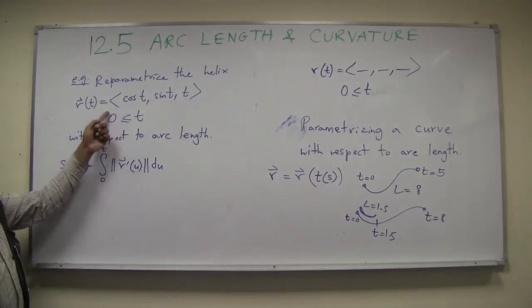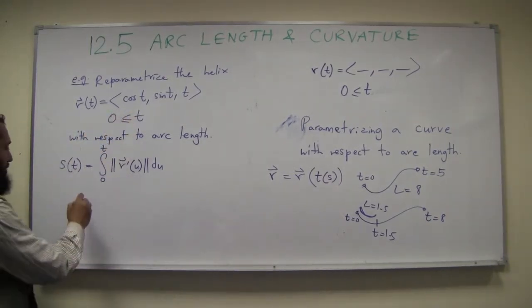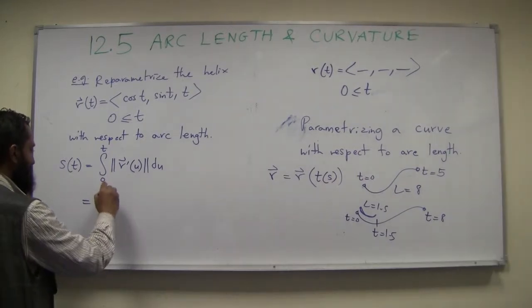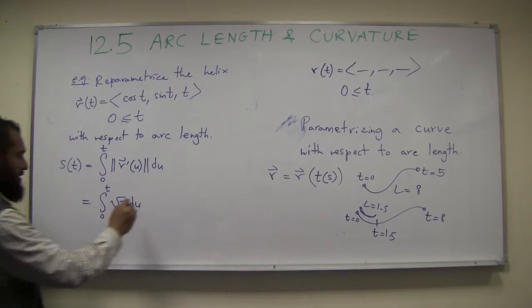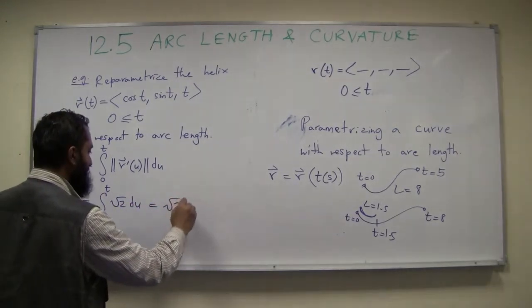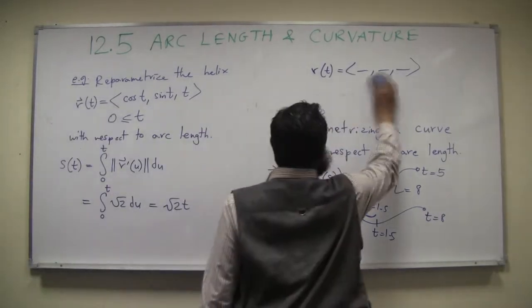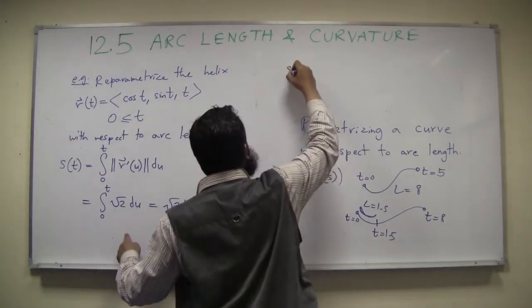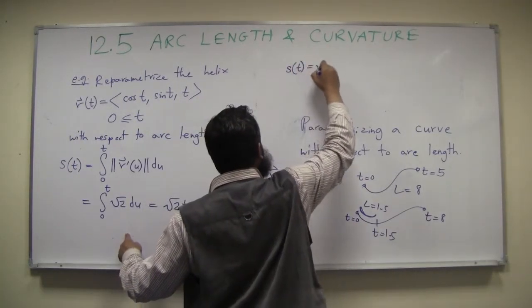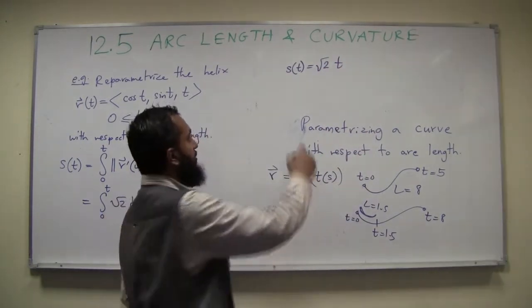Now, we did this earlier in the last example. Remember, we calculated the length of this derivative was square root of 2. So, this thing is from 0 to t, square root of 2 du, okay. So, this gives you square root of 2 t, right. So, then, I'll raise a little bit up there, just to continue. Then, what we have now. We have s as a function of t is the square root of 2 t. What I need to do is I need to express t in terms of s. So, think about it. Basically, s is this.